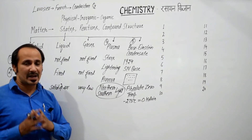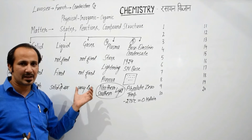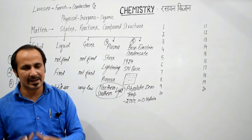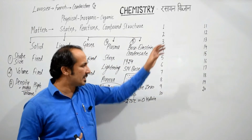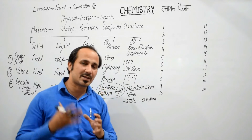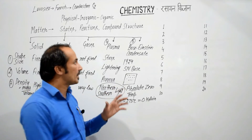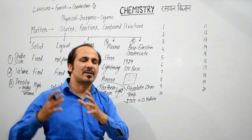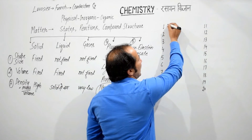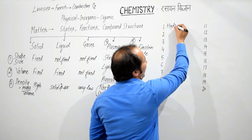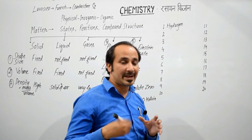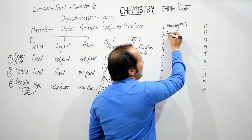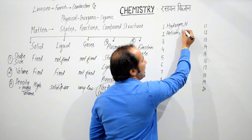अब next जो homework आज का आपके लिए रहेगा — States of Matter को याद रखना. इसके अलावा, देखिए periodic table जब तक आपको नहीं आएगी, elements नहीं आएंगे, आप chemistry नहीं सीख सकते. तो ज़्यादा नहीं, 118 elements हैं हमारे — 118 में से आपको first 20 elements के name, atomic number, और symbol याद करने हैं. First atomic number — hydrogen, symbol: capital H.